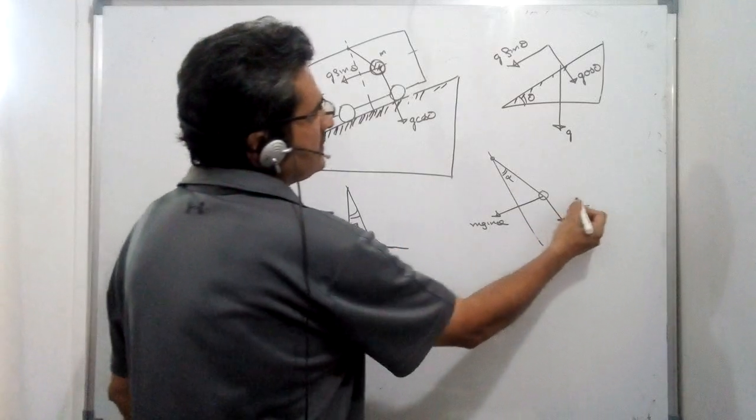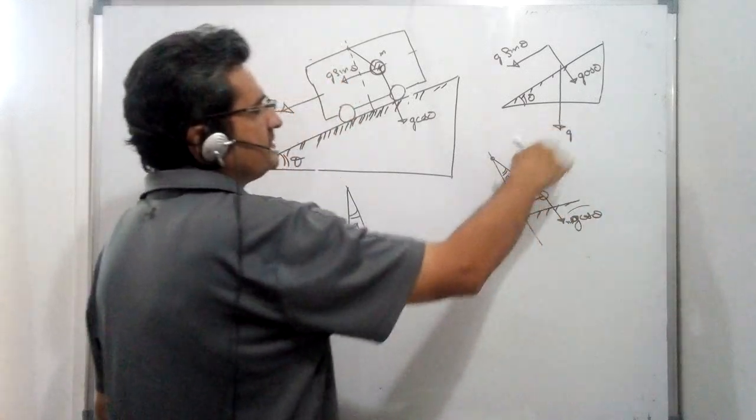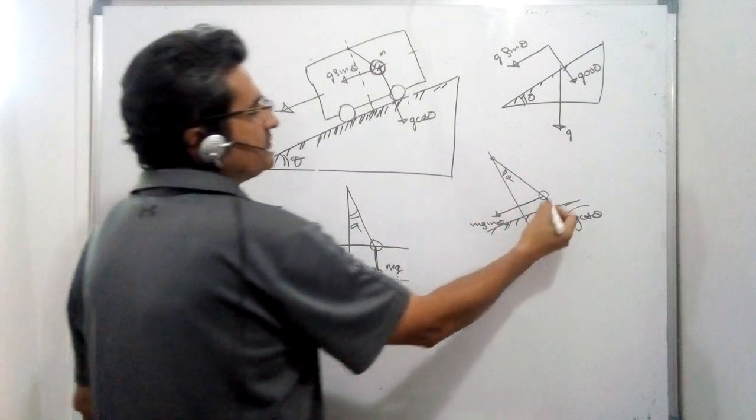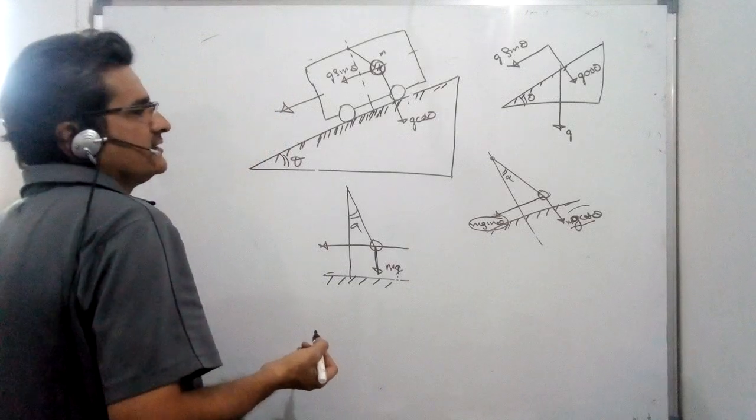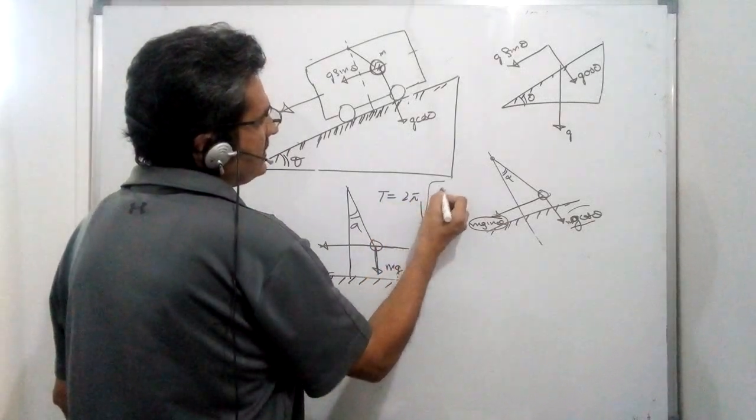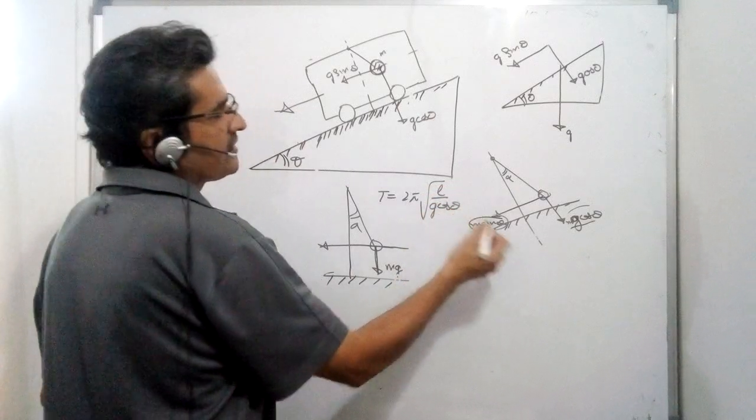Here in reference to this frame, because oscillation is perpendicular to the inclined plane, there are two forces: not only the vertical force but also the horizontal force. So can we straight away use the formula T = 2π√(L/G), replacing G with G cos theta?